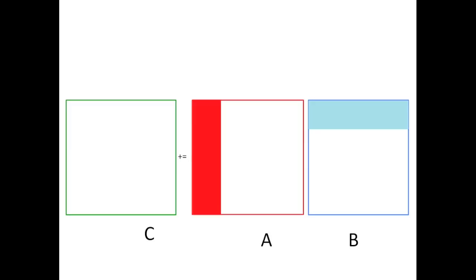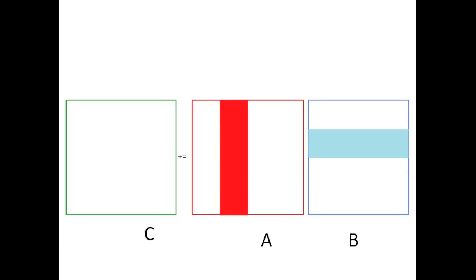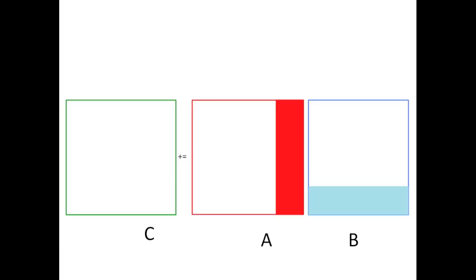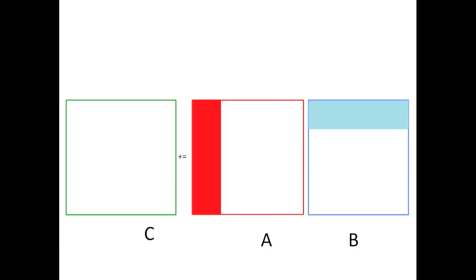then you actually can keep the data in these different layers of the memory hierarchy, and you attain the performance that we just saw for small matrices. Around that then you have to block matrices A, B, and C if the matrices are much larger than that.